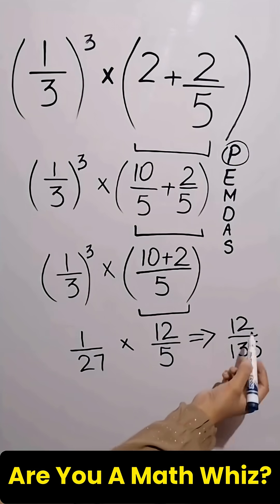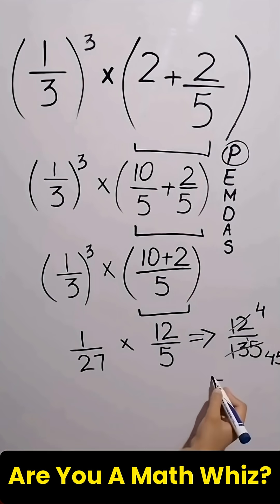Now both numerator and denominator cancel with 3 times table. And the final answer to this problem is 4 over 45.